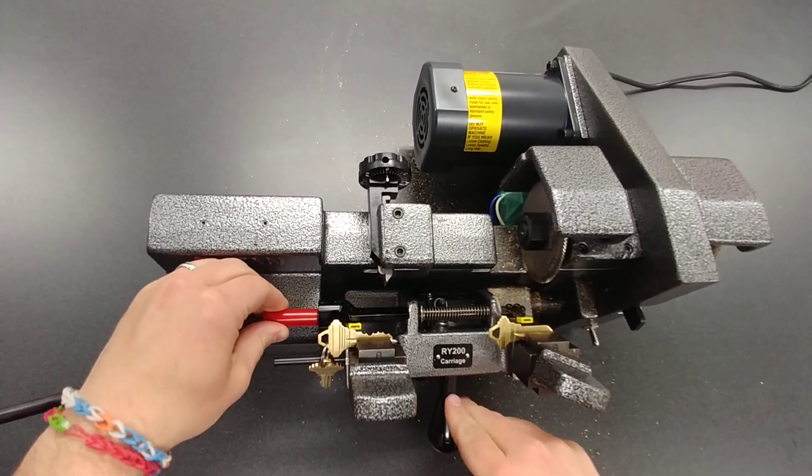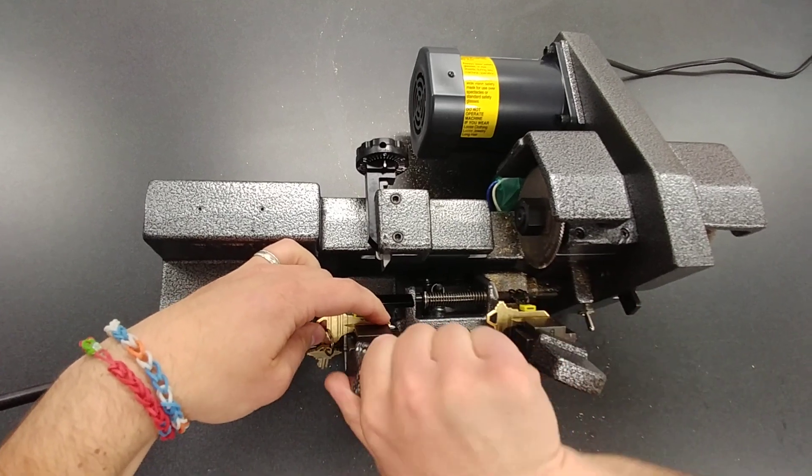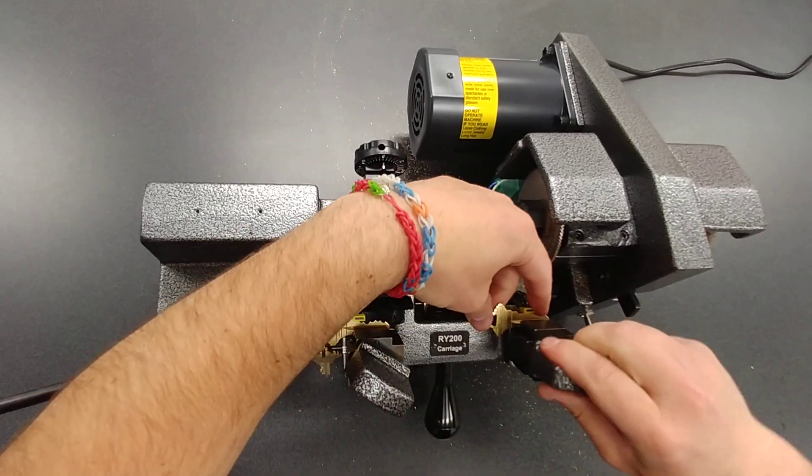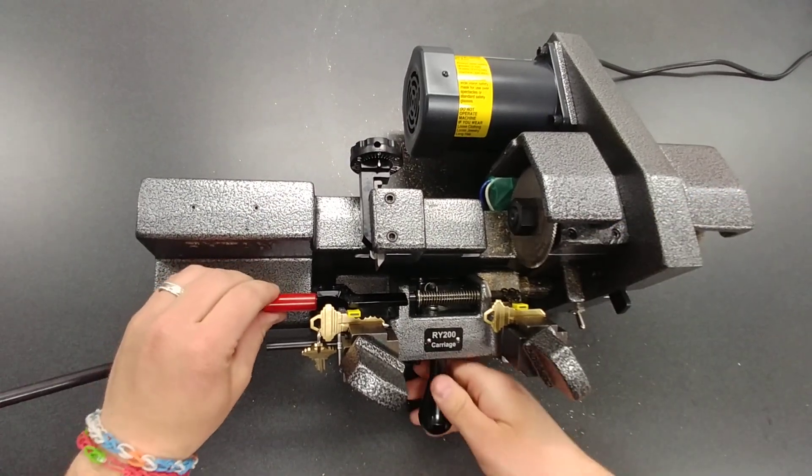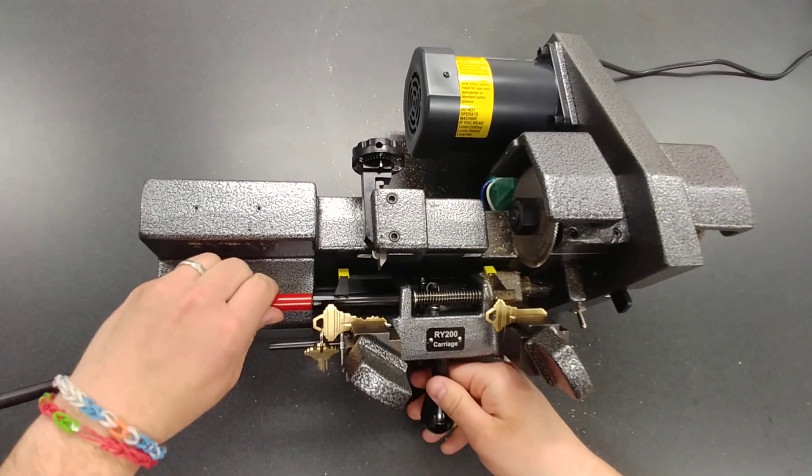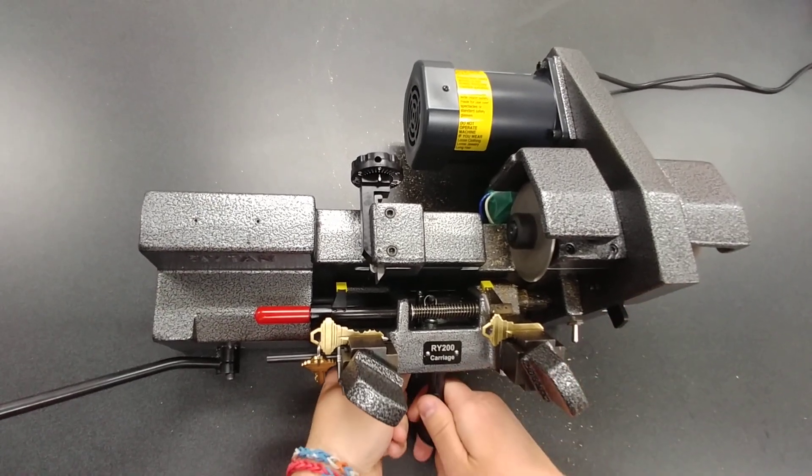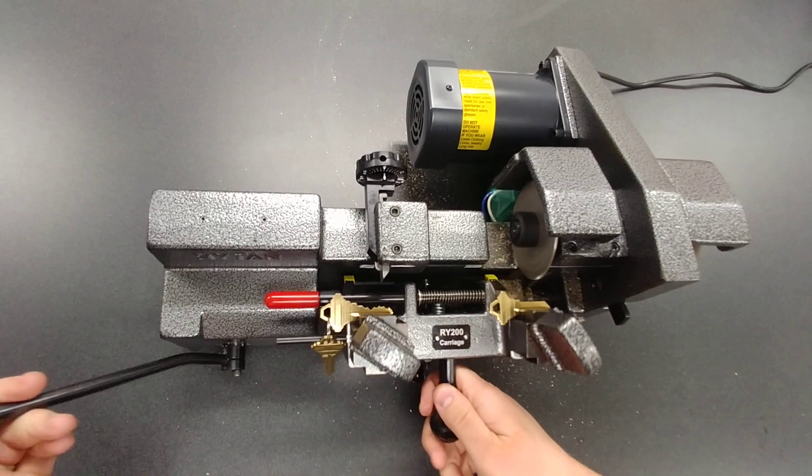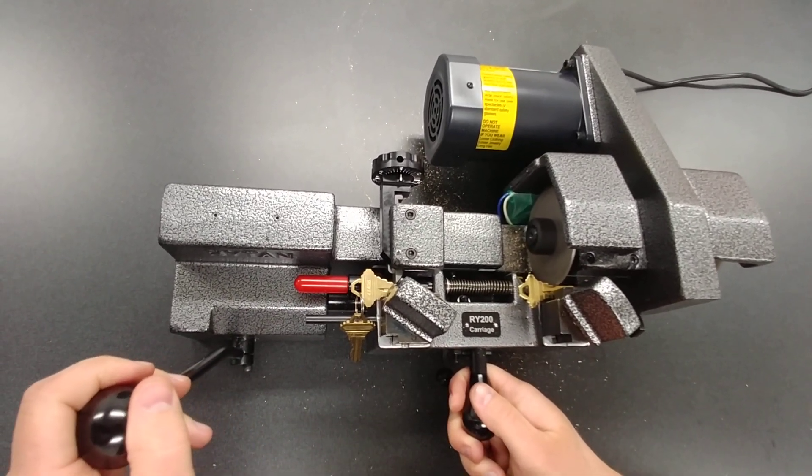What we'll do here is we'll align the shoulder stop right here, tighten that key down. We'll adjust this one to the shoulder like that. Go ahead and tighten it down like that. We'll go ahead and release this down. We'll turn the machine on. We'll release this pin on the bottom to bring this up. Bring the key here to the start and we'll just slowly walk it through.